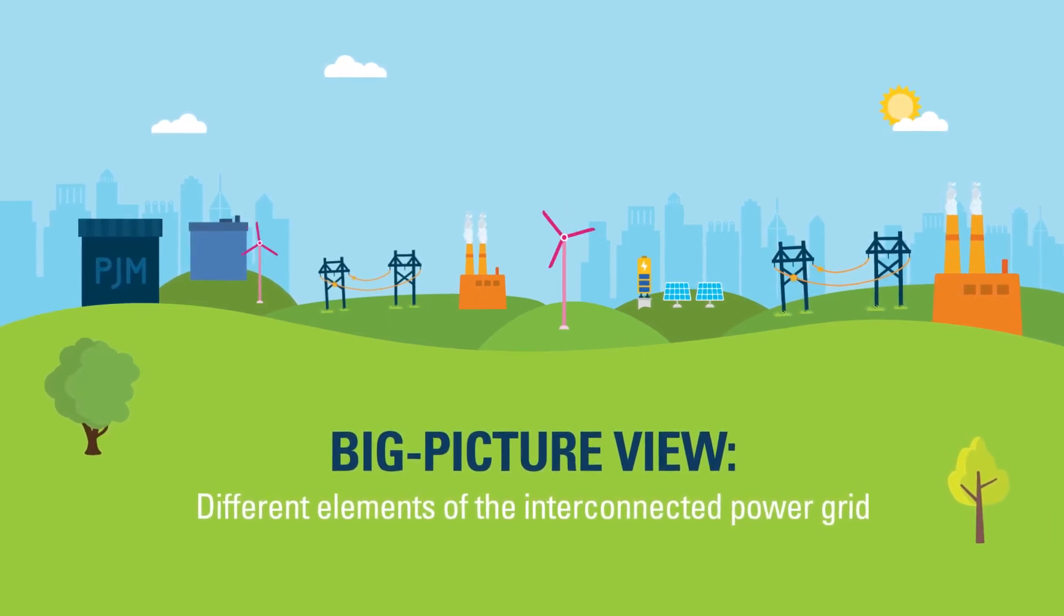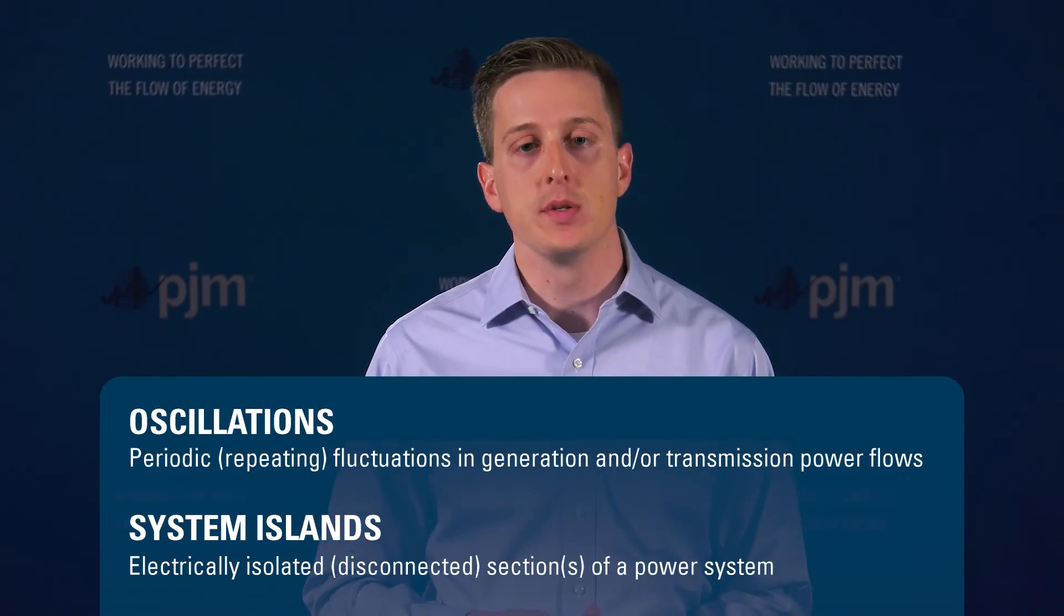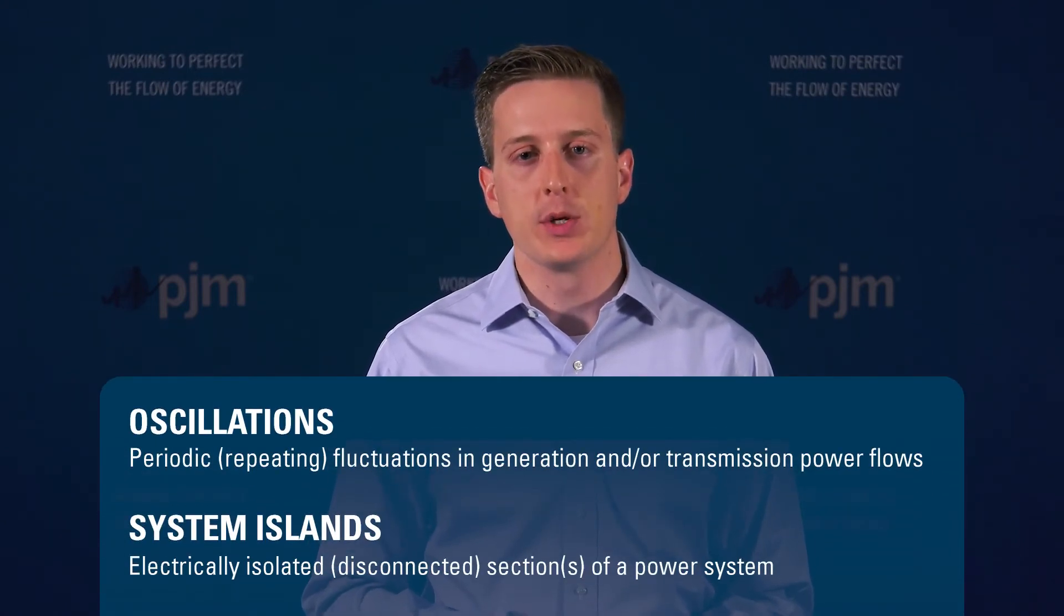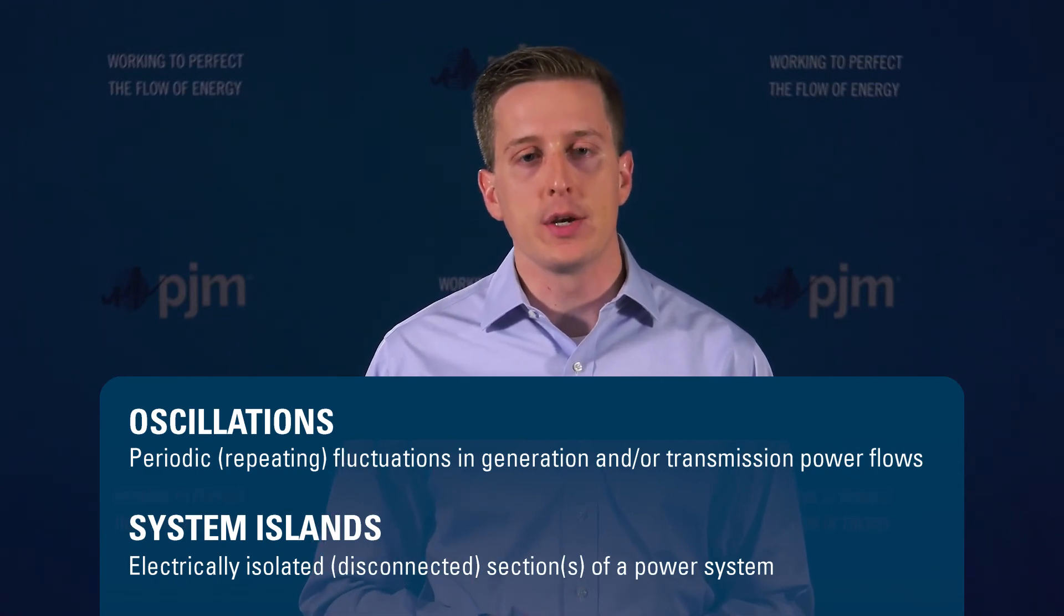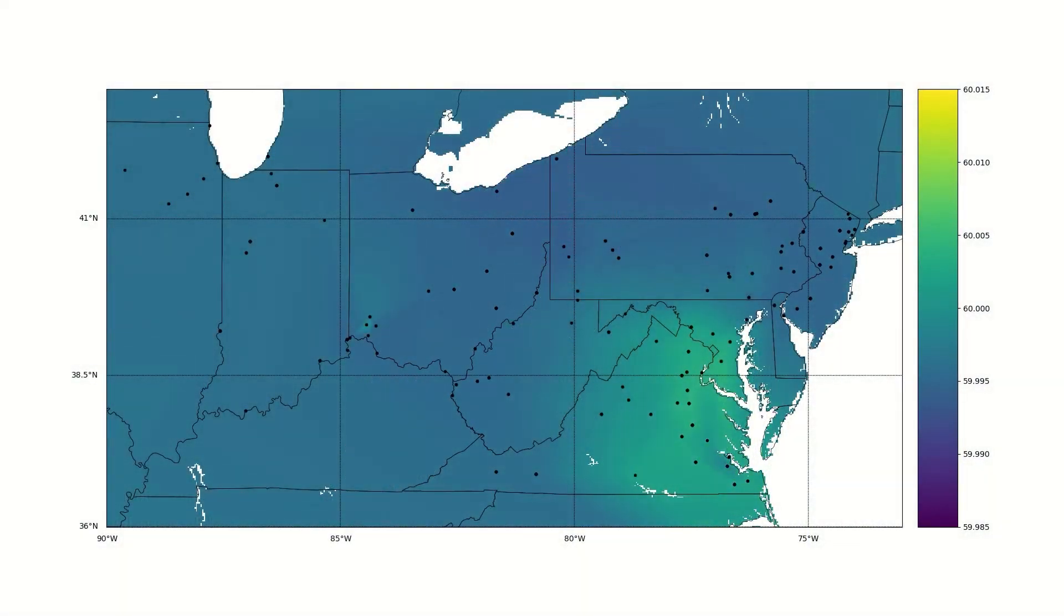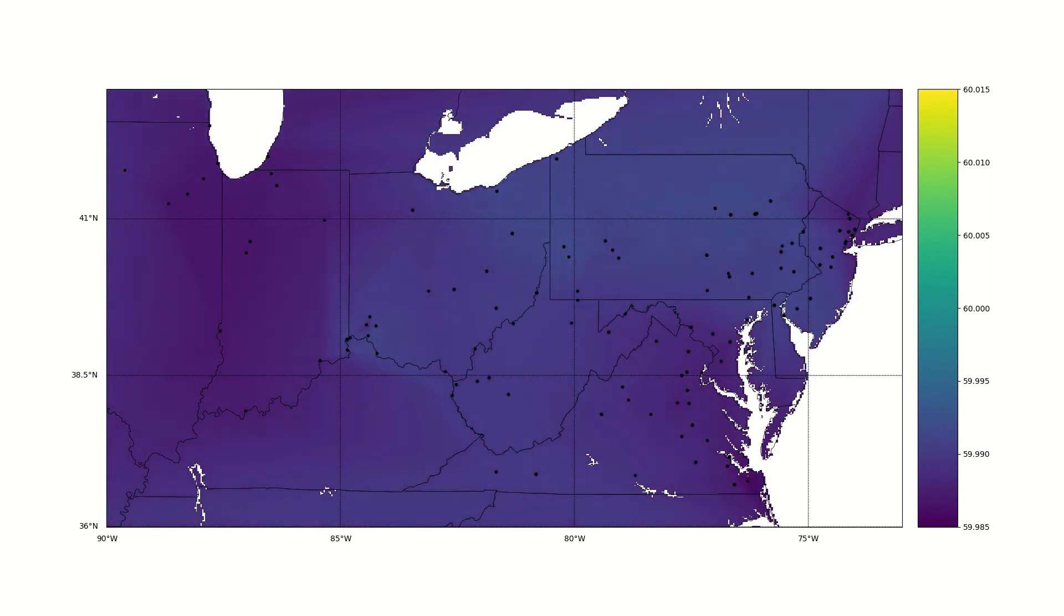This data is also used to detect certain high-impact, low-frequency events on the grid. Like oscillations, when equipment isn't outputting electricity at a steady rate. And system islands, when a portion of the electric system is separated from the rest. The information allows us to monitor grid stress as well, using heat maps that show hot spots of high electricity use areas.